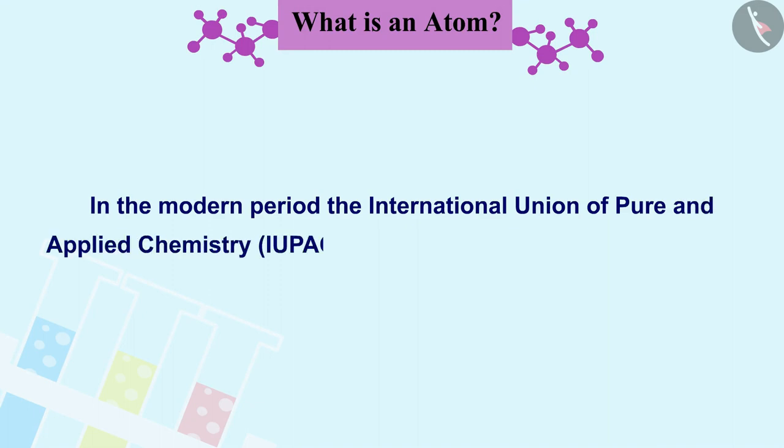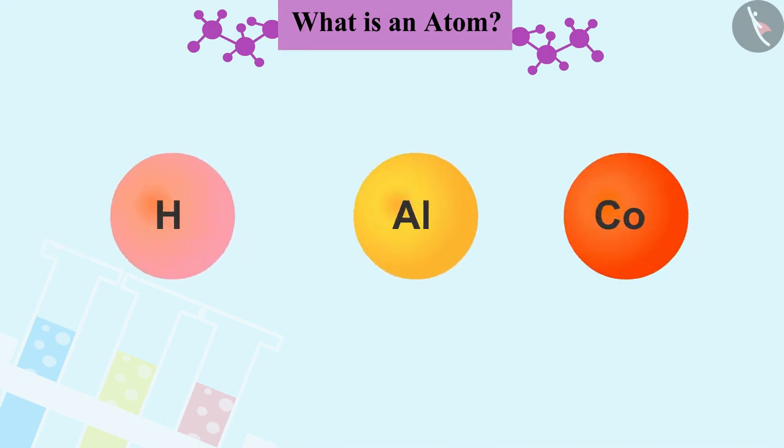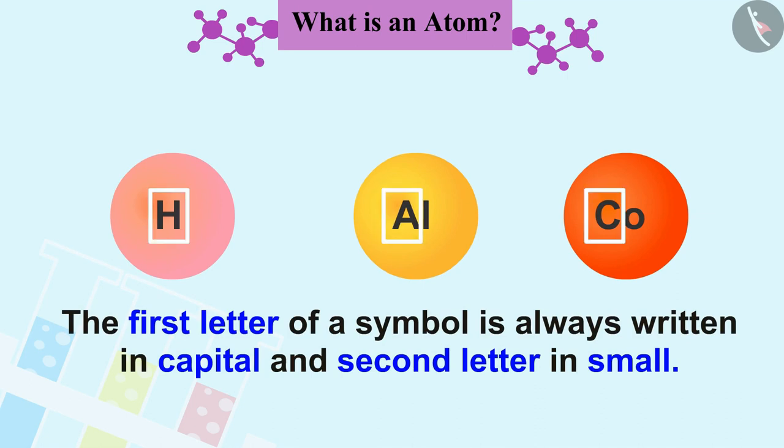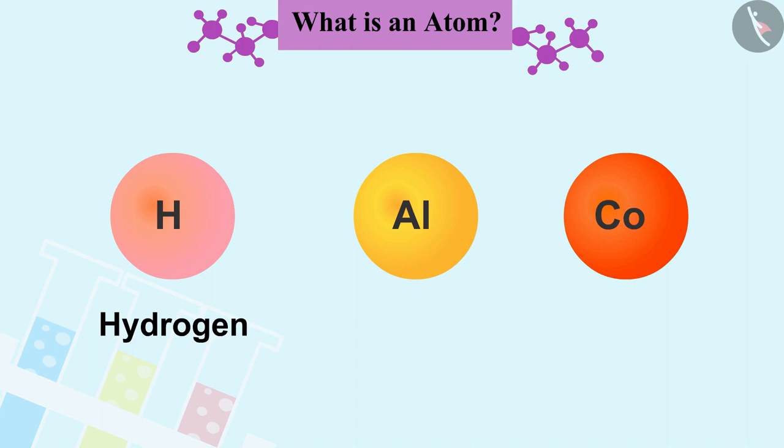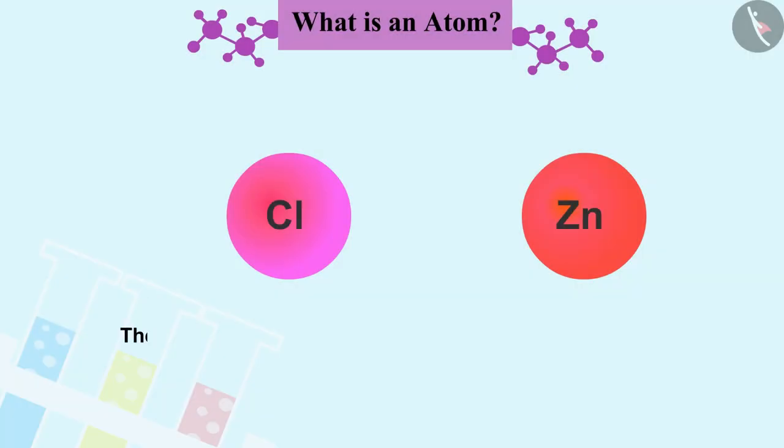Symbols of most elements are made up of one or two letters of the English names of those elements. The first letter of a symbol is always written in capital and the second letter in small. For example, for hydrogen H, for aluminum Al, for cobalt Co, etc.